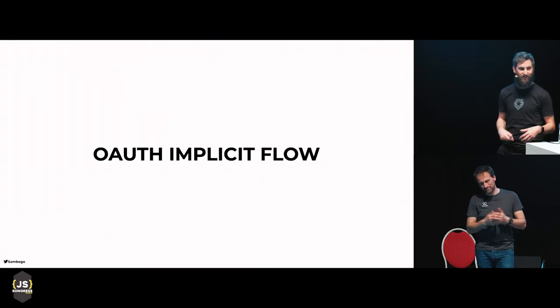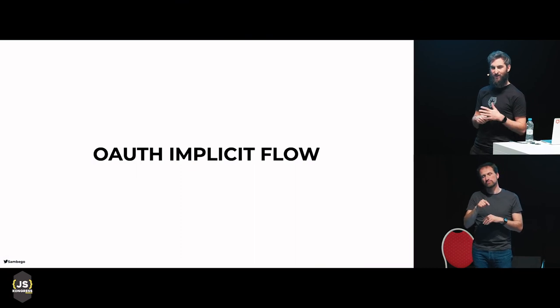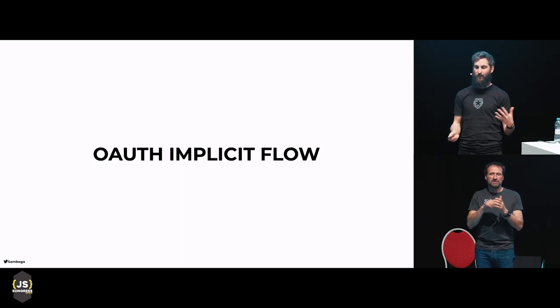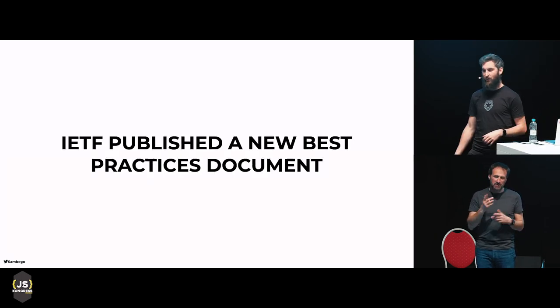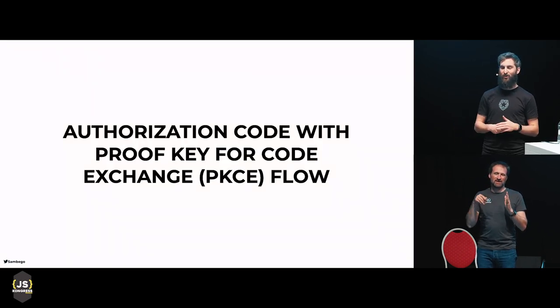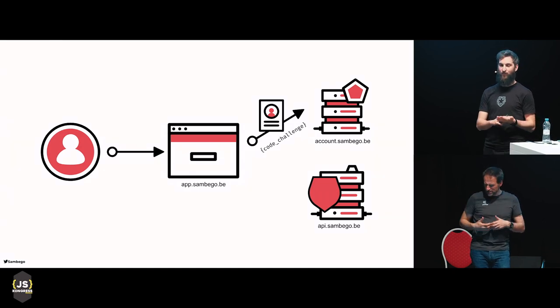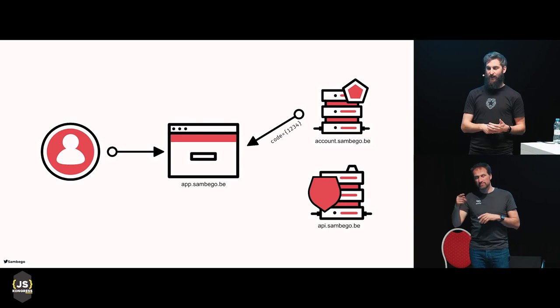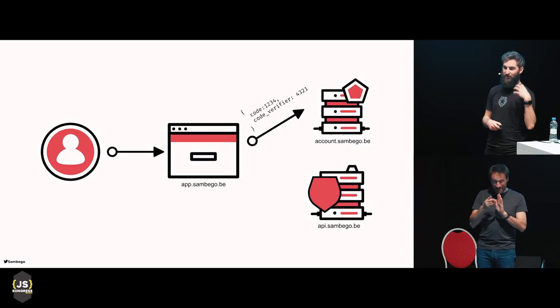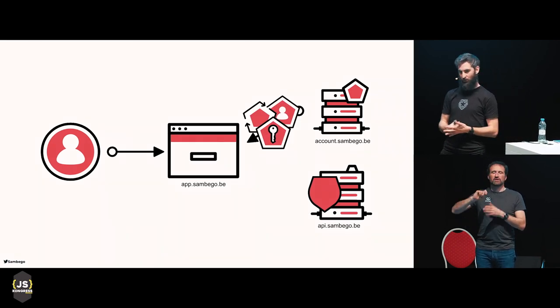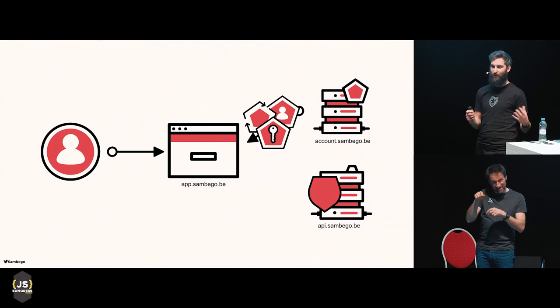This uses the OAuth implicit flow, and there's been a lot of fuss about it lately. The IETF has issued guidance that you should try to avoid this flow in the future because it's not the most secure. They recommend the authorization code flow with Proof Key for Code Exchange (PKCE). You provide your credentials together with a code challenge to your authorization server, it returns a code, you send that code together with a verifier back, and then you get your tokens — meaning you can always verify these tokens were issued to you and not to somebody else.